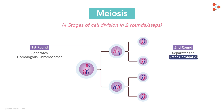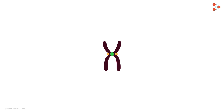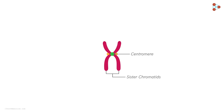The next term is sister chromatids. In a single chromosome structure, the two thread-like arms attached to the central bulge called the centromere are called sister chromatids. A sister chromatid is an exact copy of the other, as it contains the replicated DNA.